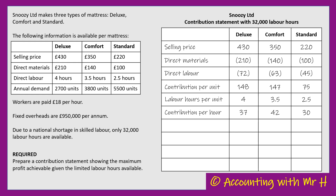This has changed things slightly. When we looked at contribution per unit, the Deluxe generated the most at £148 compared to £147 for the Comfort and £75 for the Standard. But now, when we look at it per labour hour, the Comfort is the best one to make first - it generates £42 compared to £37 for the Deluxe and £30 for the Standard.